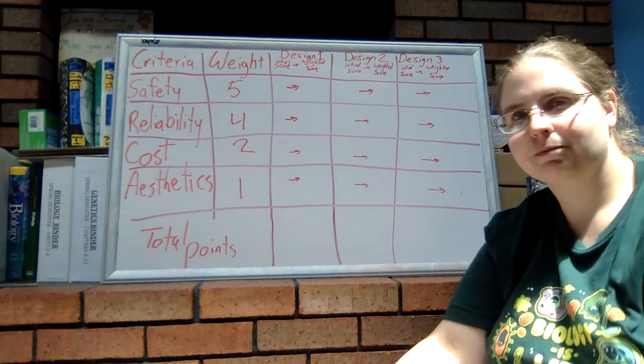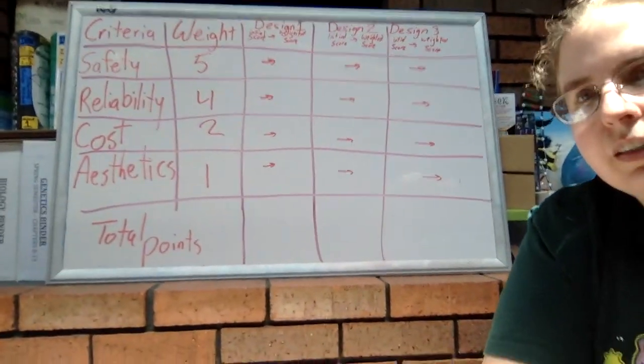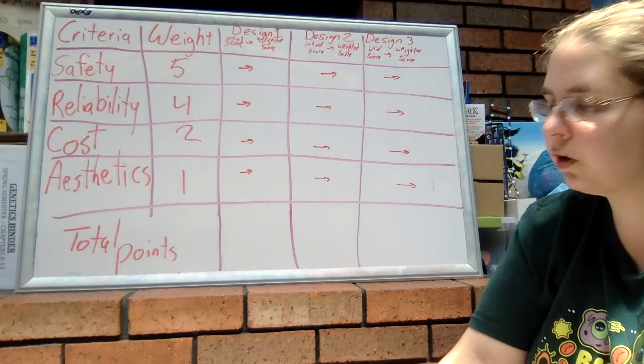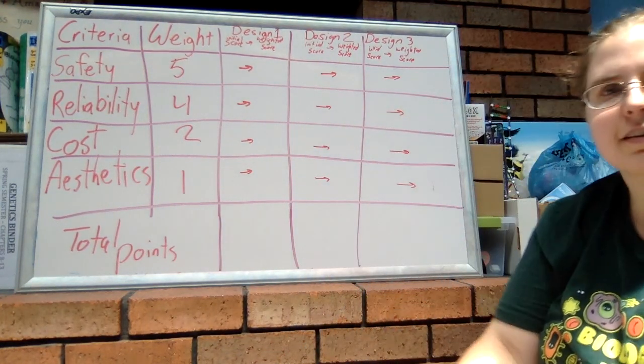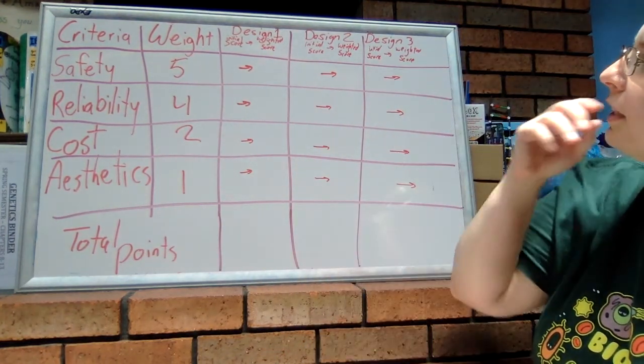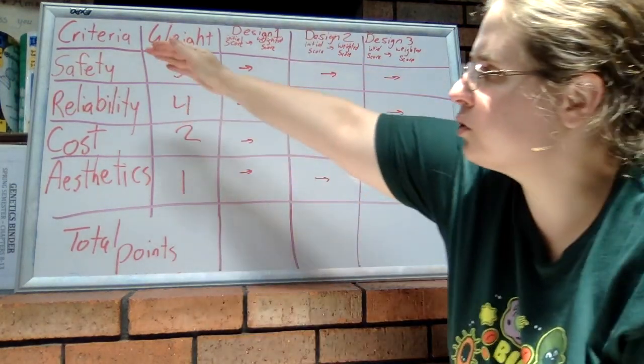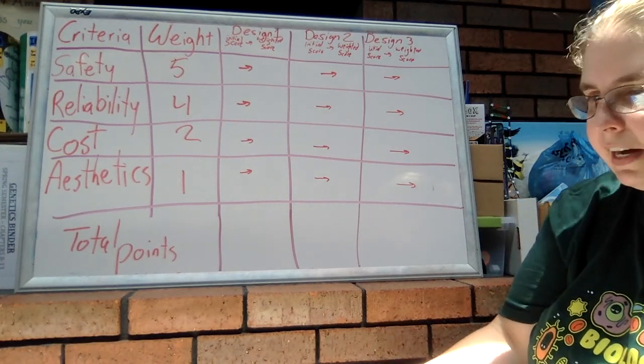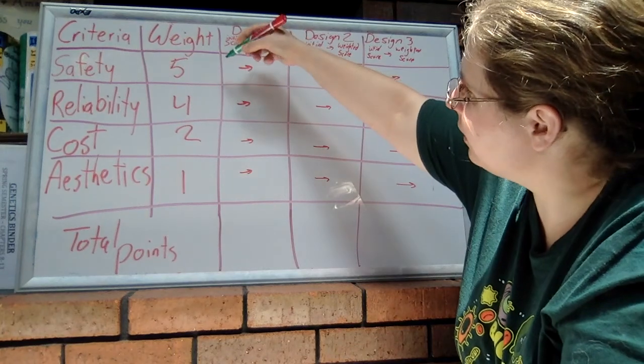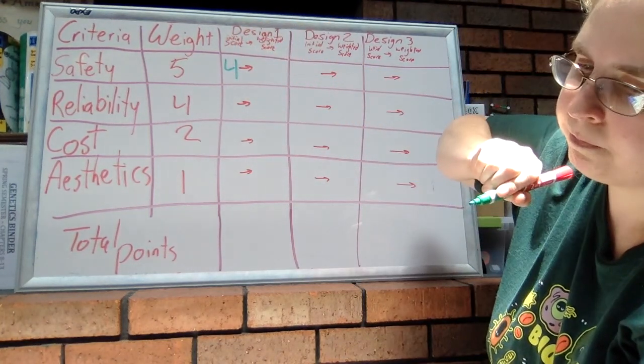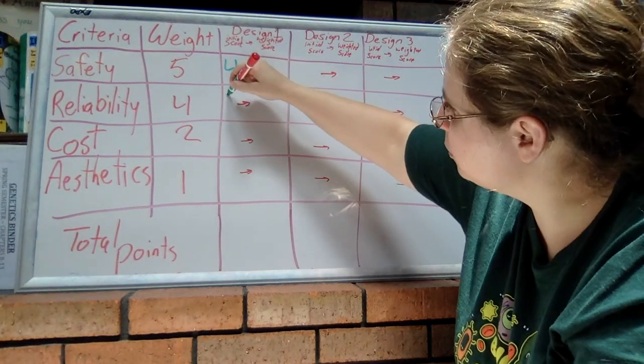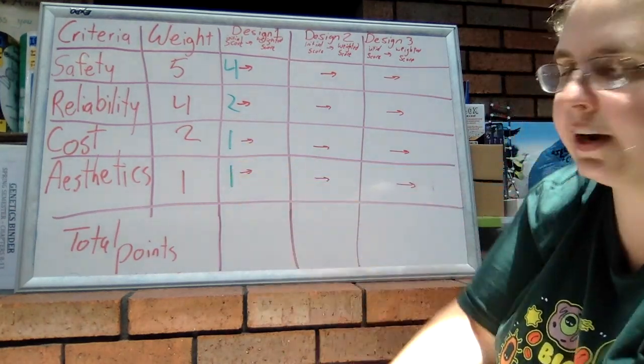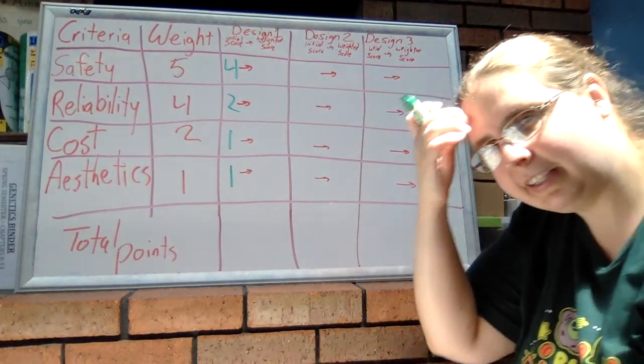So how we do this now is I'm going to go through and give each one of these an initial score. I'm going to give design one an initial score for all these criteria. On a scale of one to five, I felt that this one had a four for safety, a two for reliability, a one for cost, and a one for aesthetics.